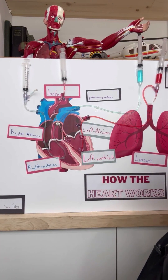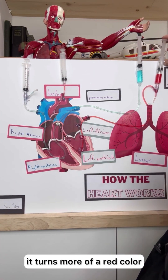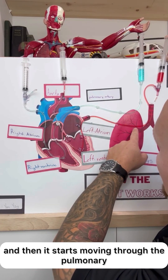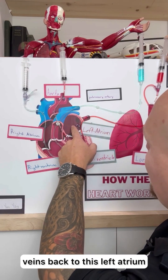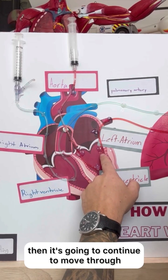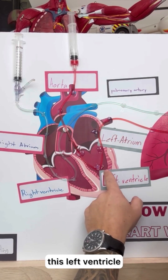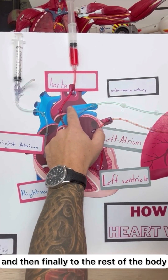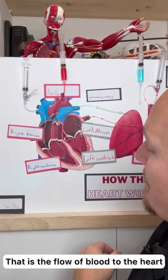Once we reach the reoxygenated point where we get oxygen in it, it turns more of a red color and starts moving through the pulmonary veins back to the left atrium, then continues through the left ventricle, on to the aorta, and finally to the rest of the body. That is the flow of blood through the heart.